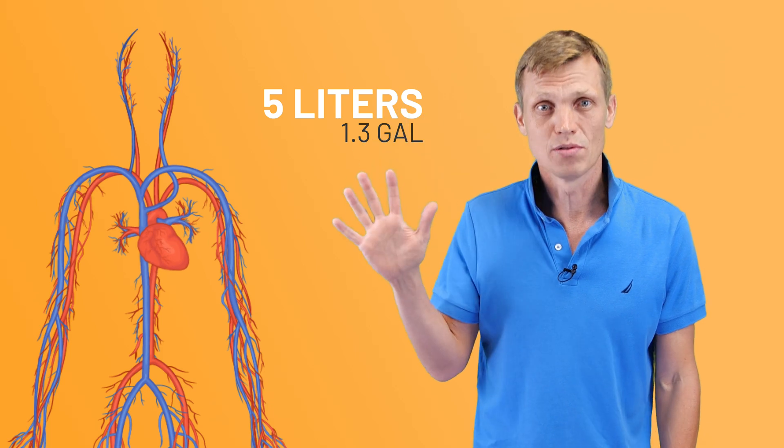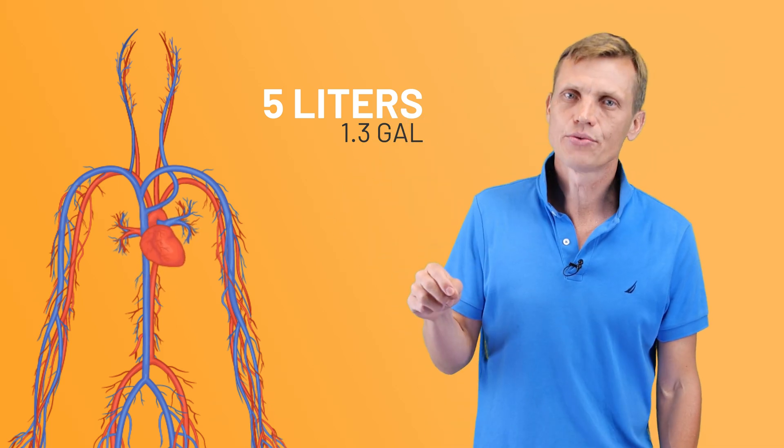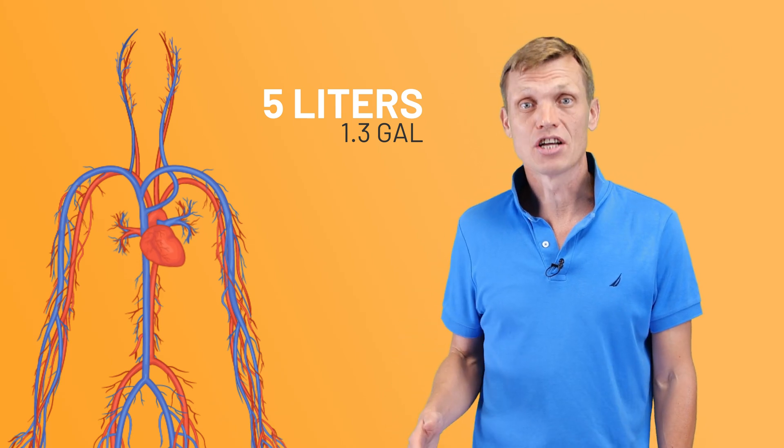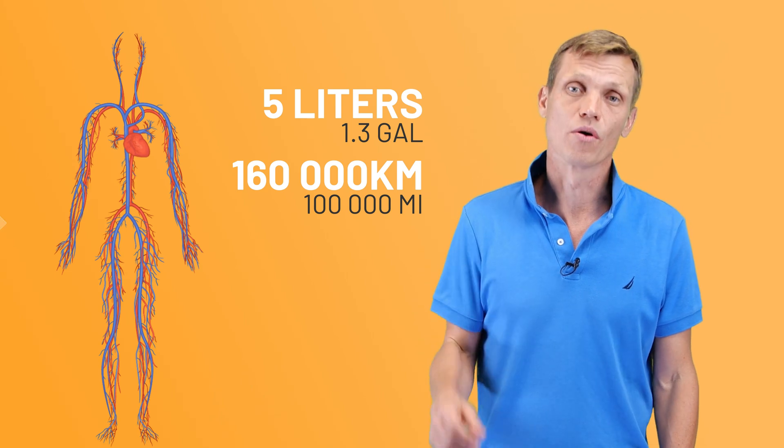Hi, Andri here. Welcome to the Practical Health channel. The human body contains around 5 liters of blood, constantly circulating by the heart. With every contraction, the heart creates pressure, forcing the blood through a network of vessels almost 160,000 kilometers long.